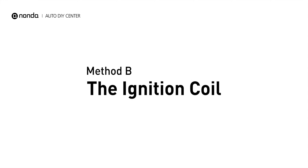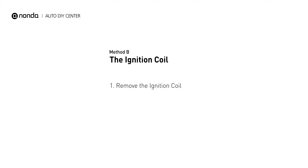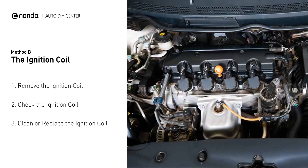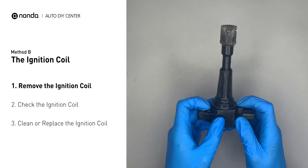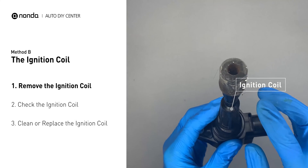Method B: the ignition coil. Ignition coils are usually installed directly at the cylinder head, above the spark plug. First, carefully remove the ignition coil from the engine.